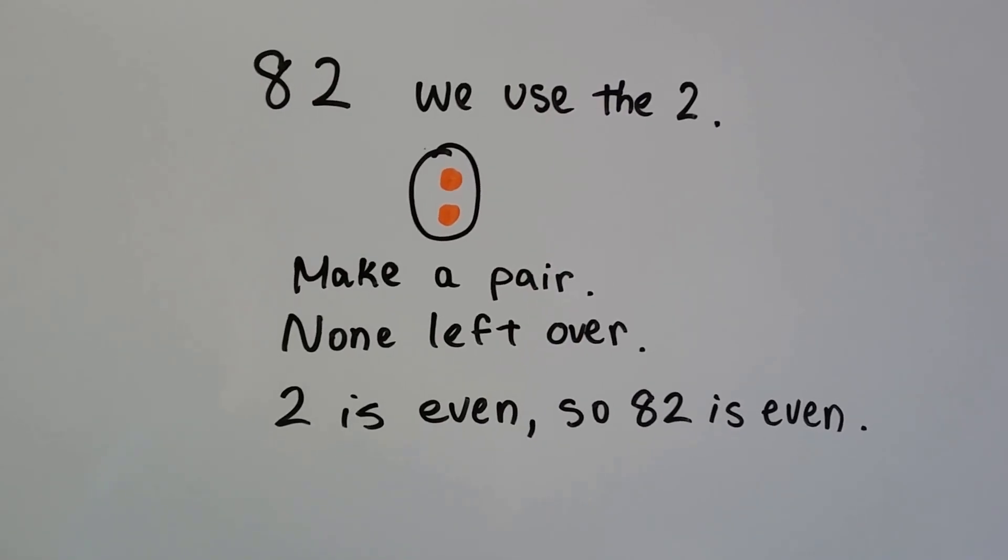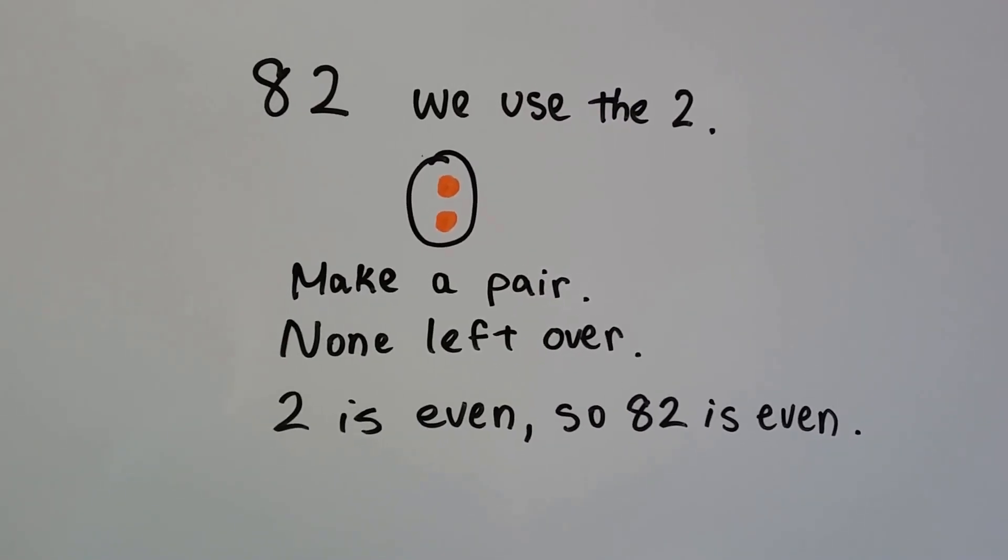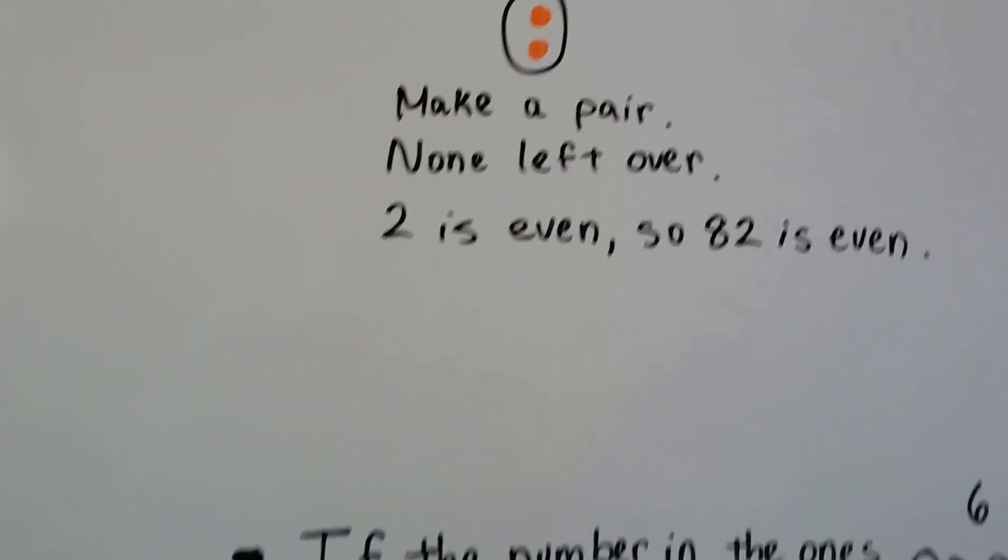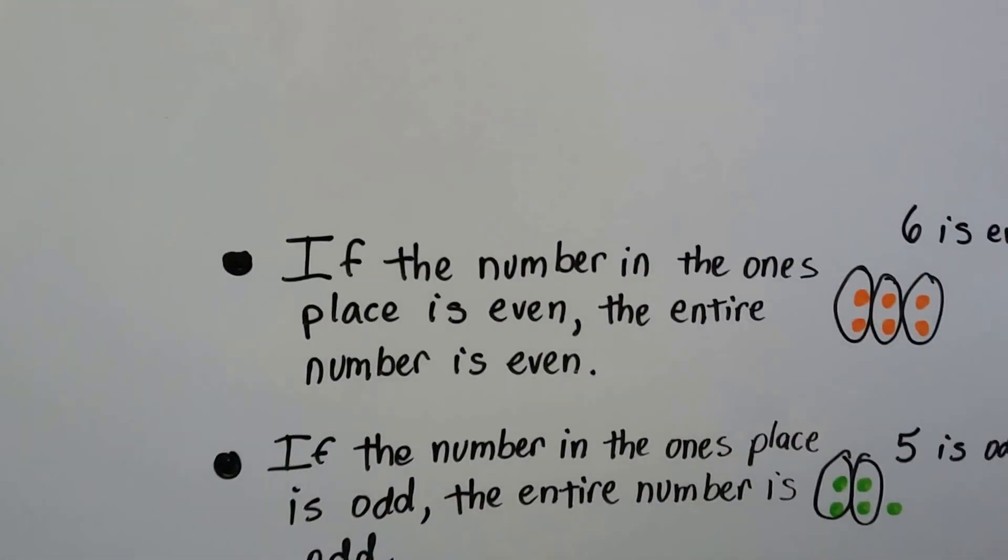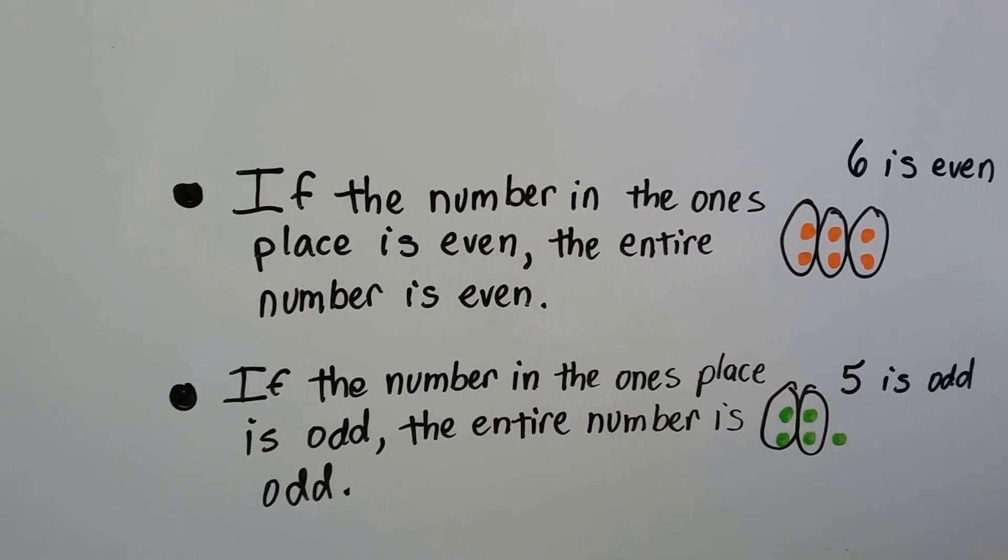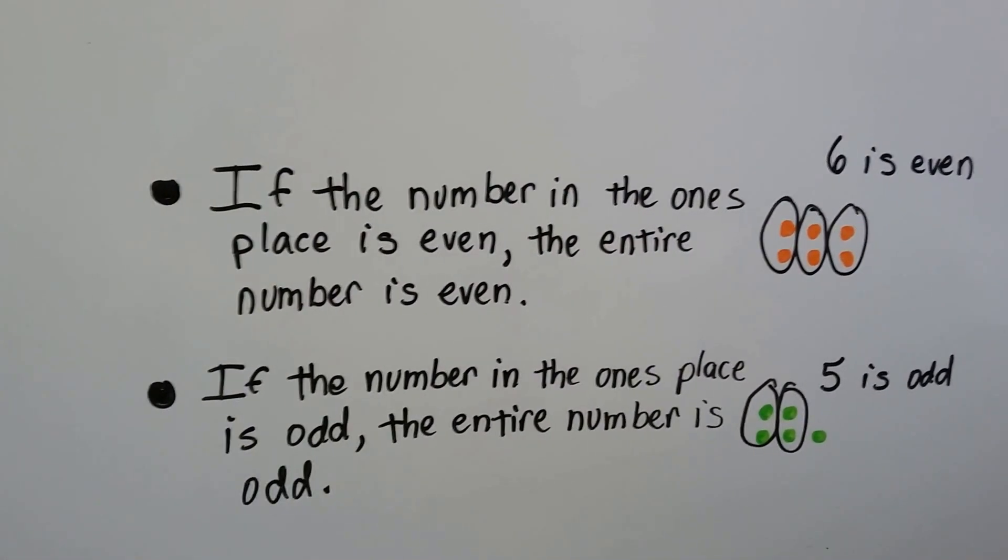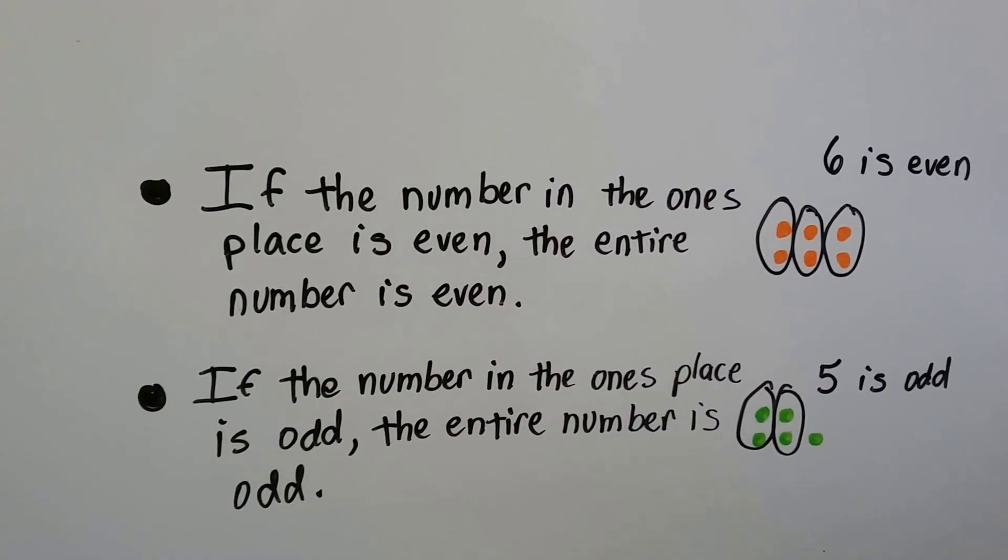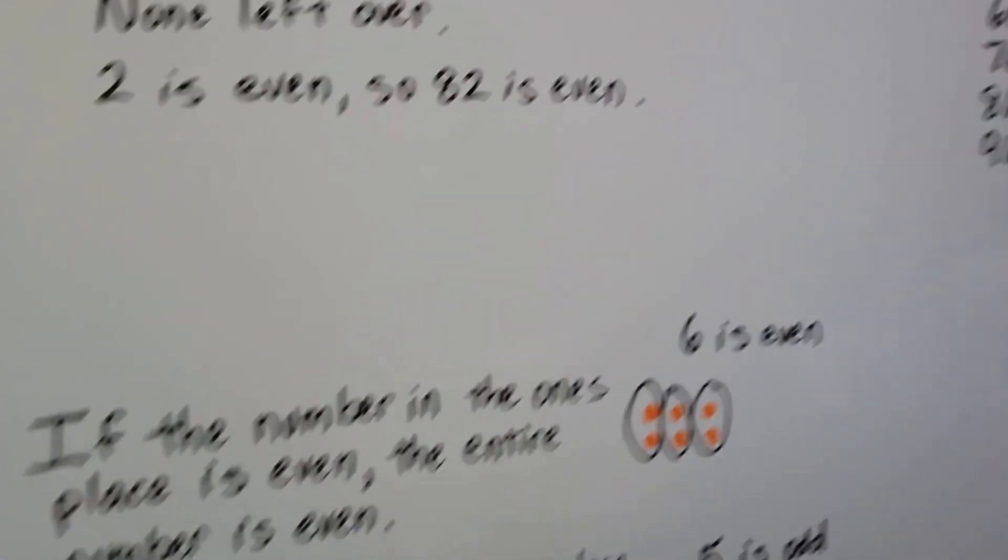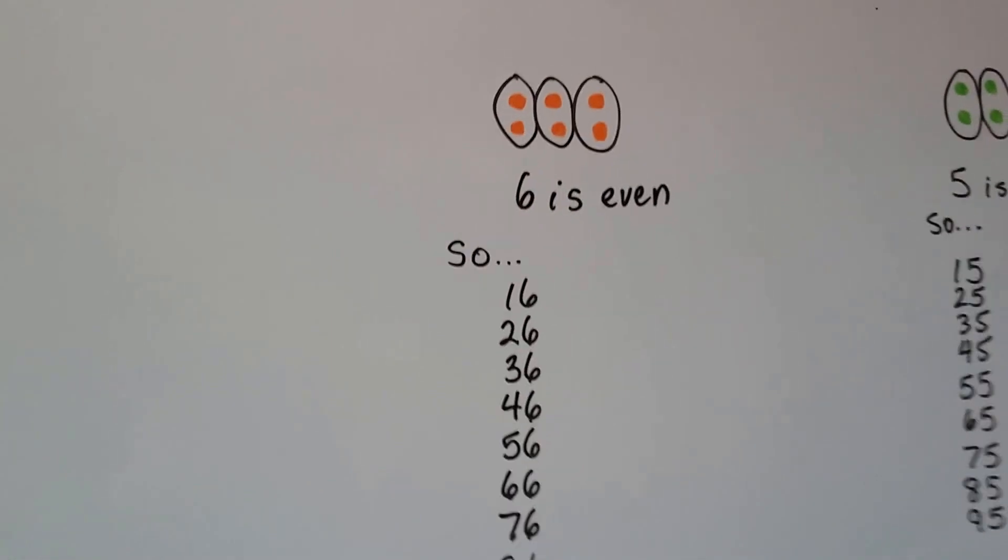If the number in the ones place is even, the entire number is even. If the number in the ones place is odd, the entire number is odd. We make pairs with the 6, there's none left over.